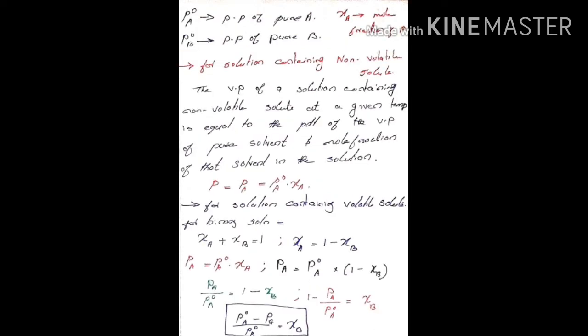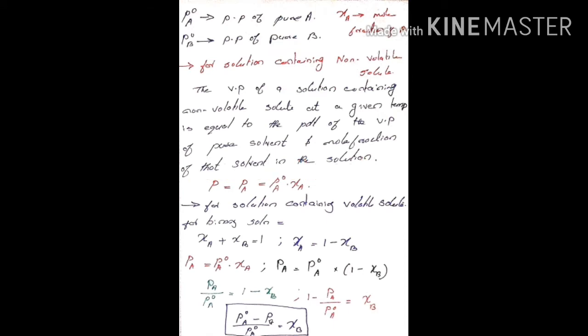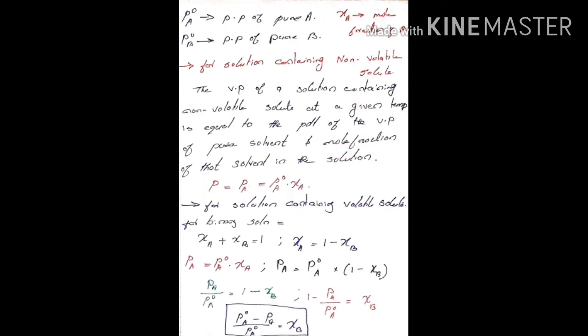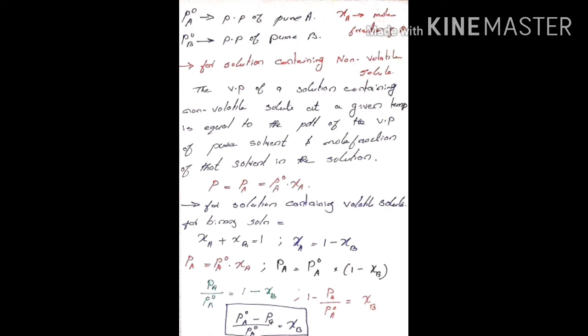For a solution containing a non-volatile solute, the partial vapor pressure is equal to the product of the vapor pressure of the pure solvent and the mole fraction of that solvent in the solution.